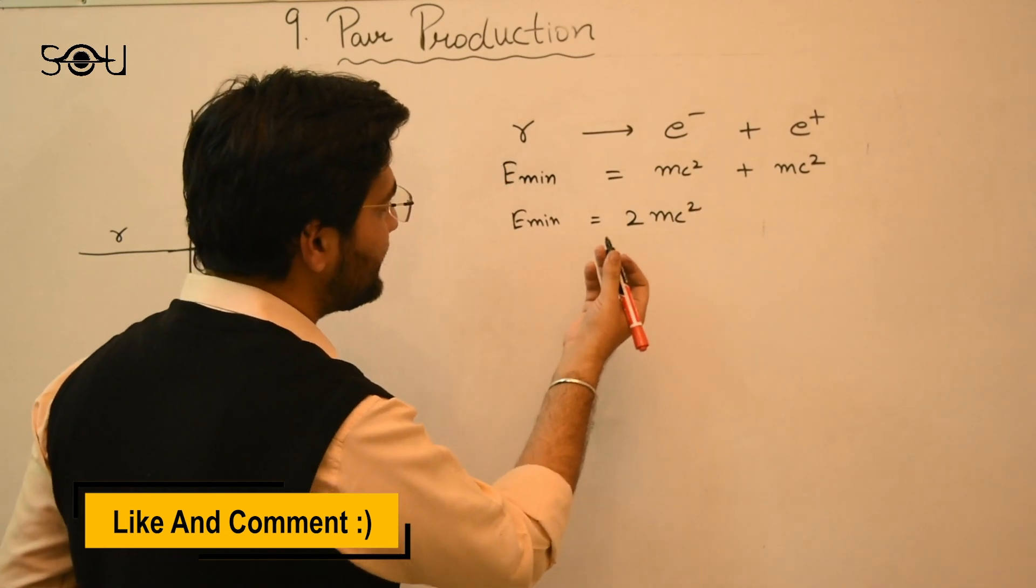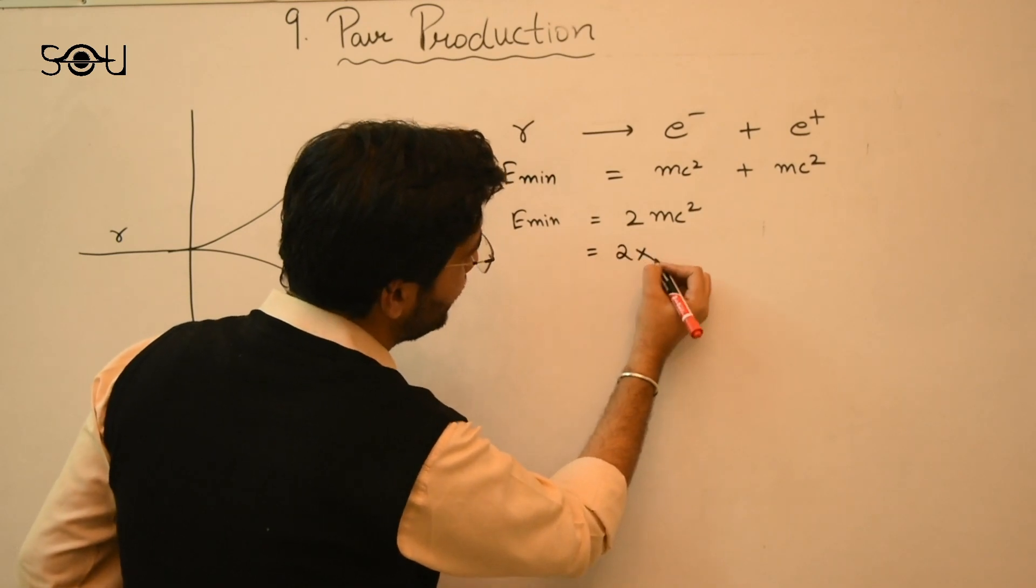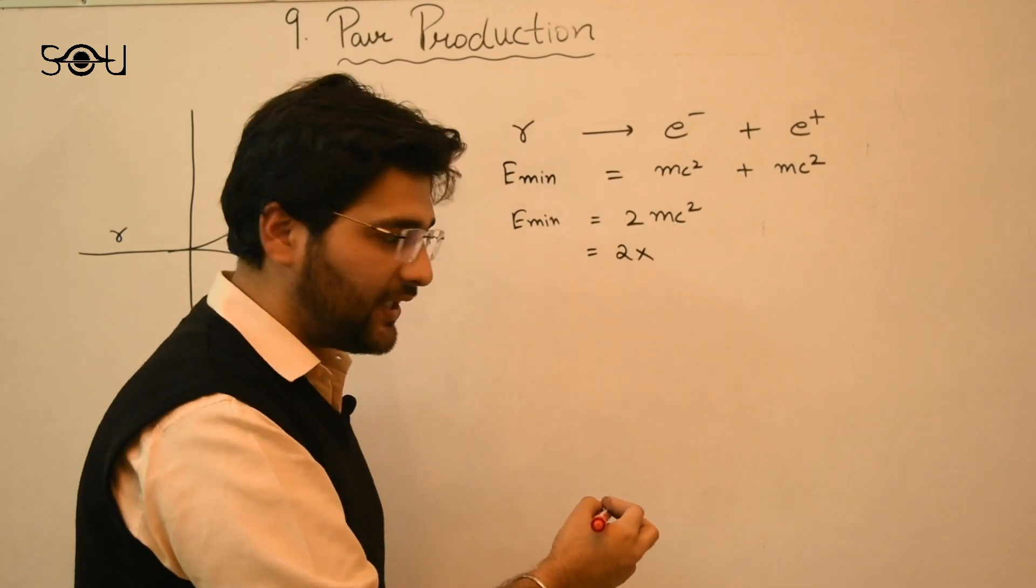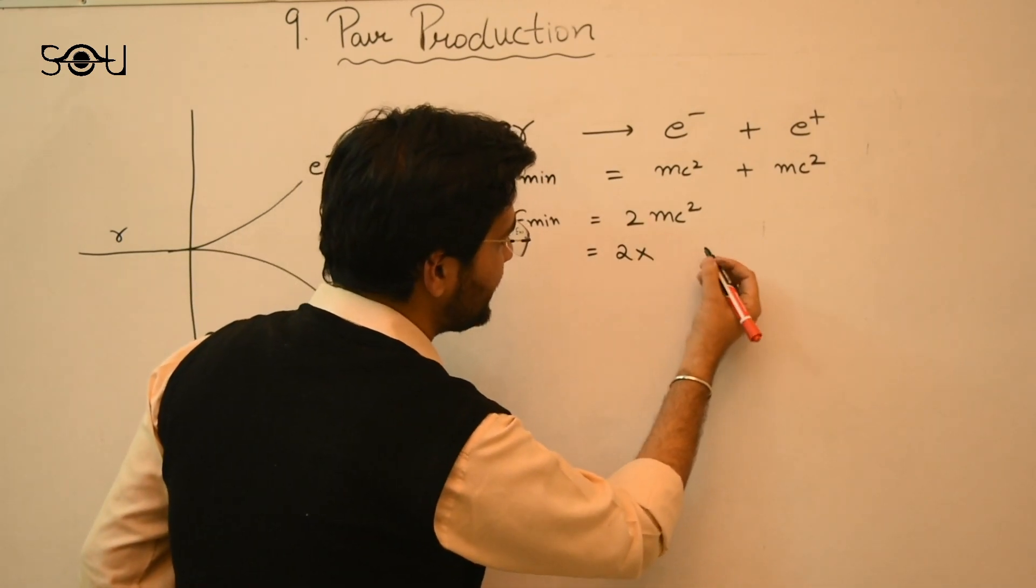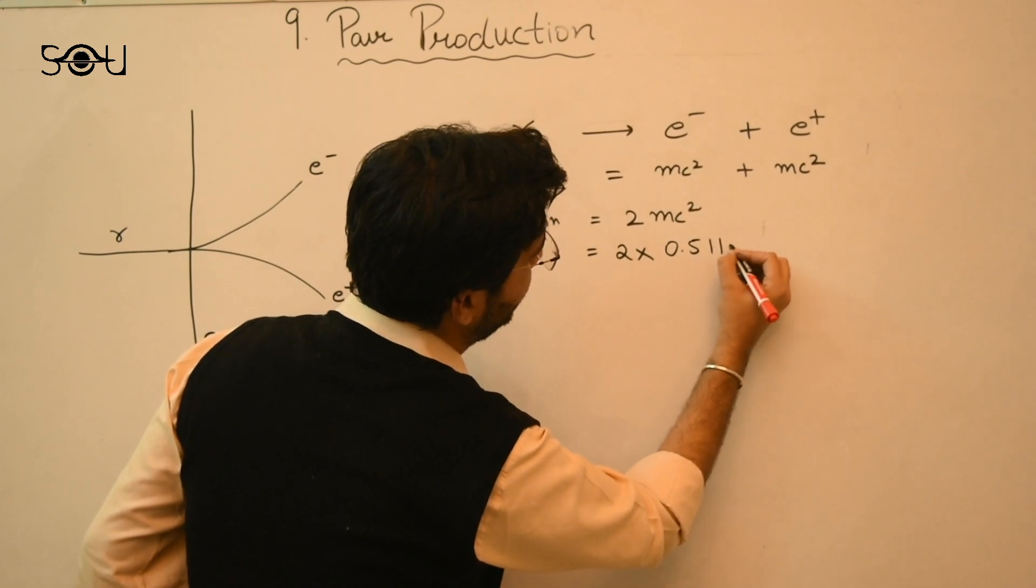This all follows from Einstein's theory of relativity. So this becomes 2 into, now mc square, m is the mass of electron in MeV, that is mega electron volts. It is 0.511 MeV.